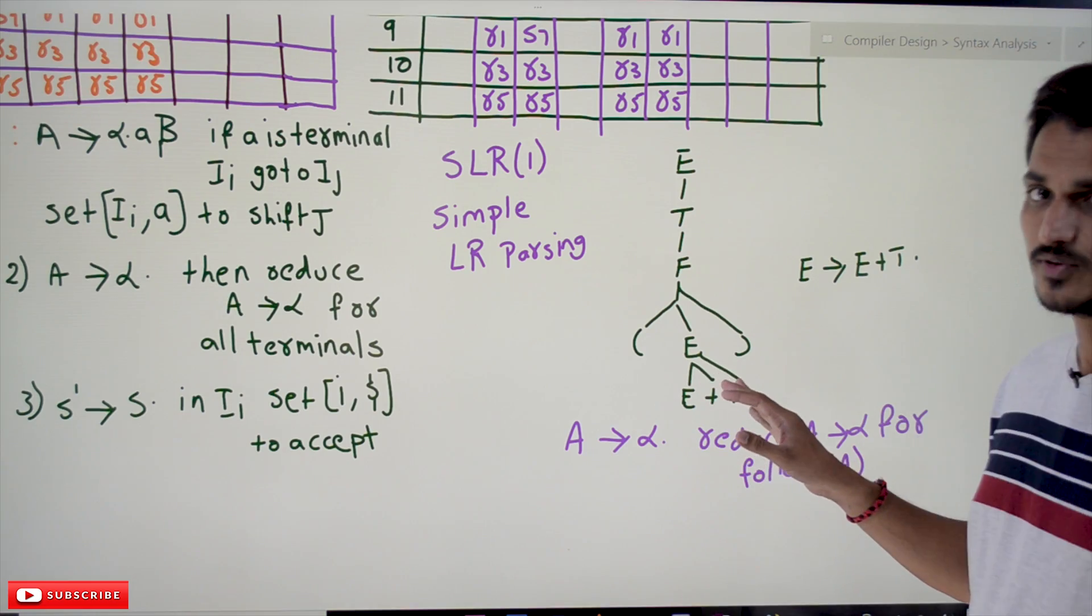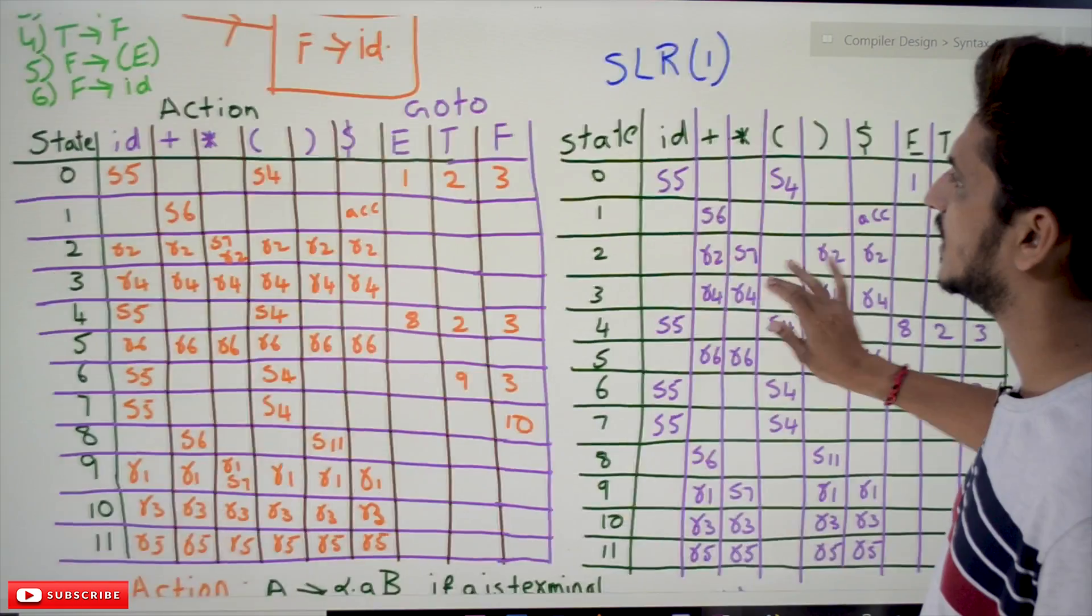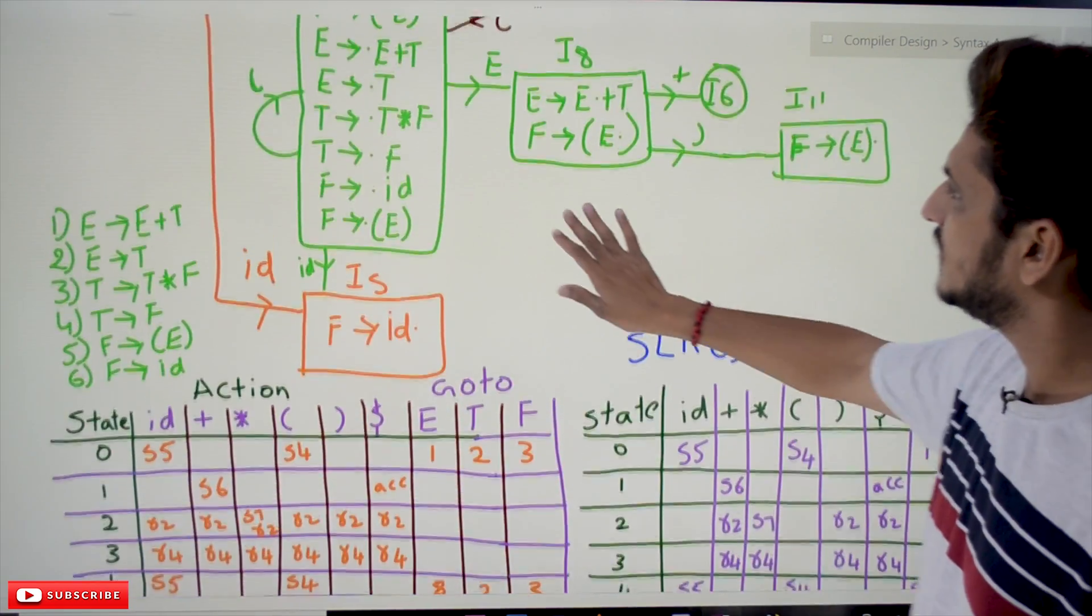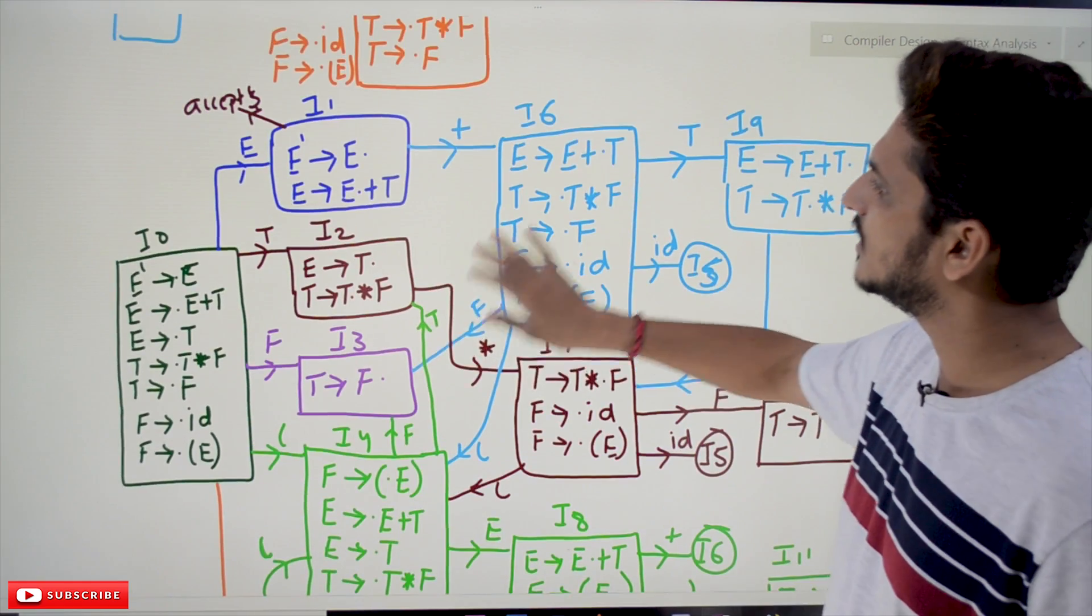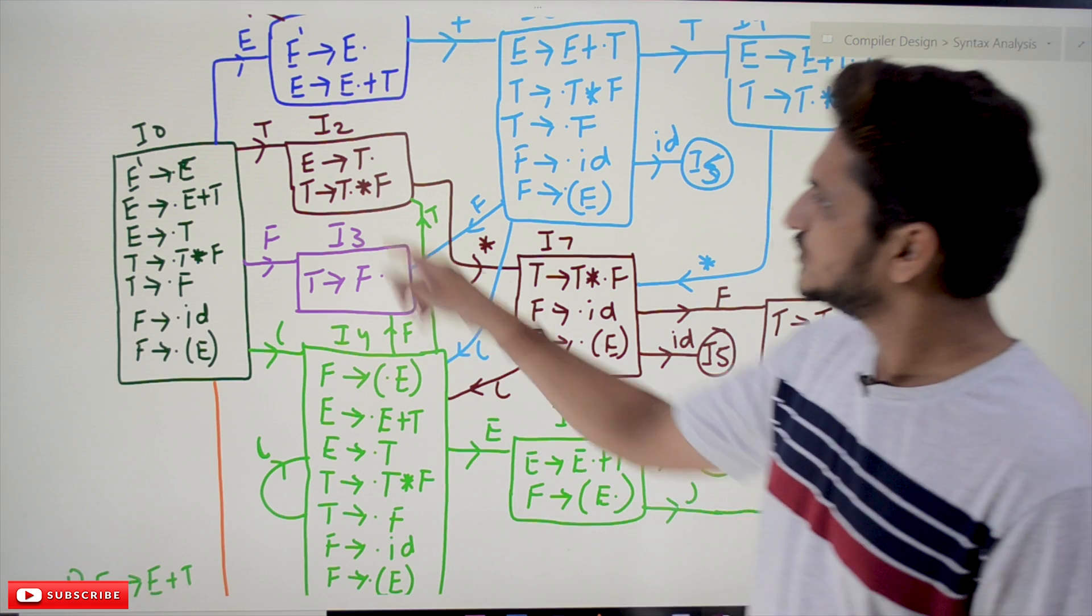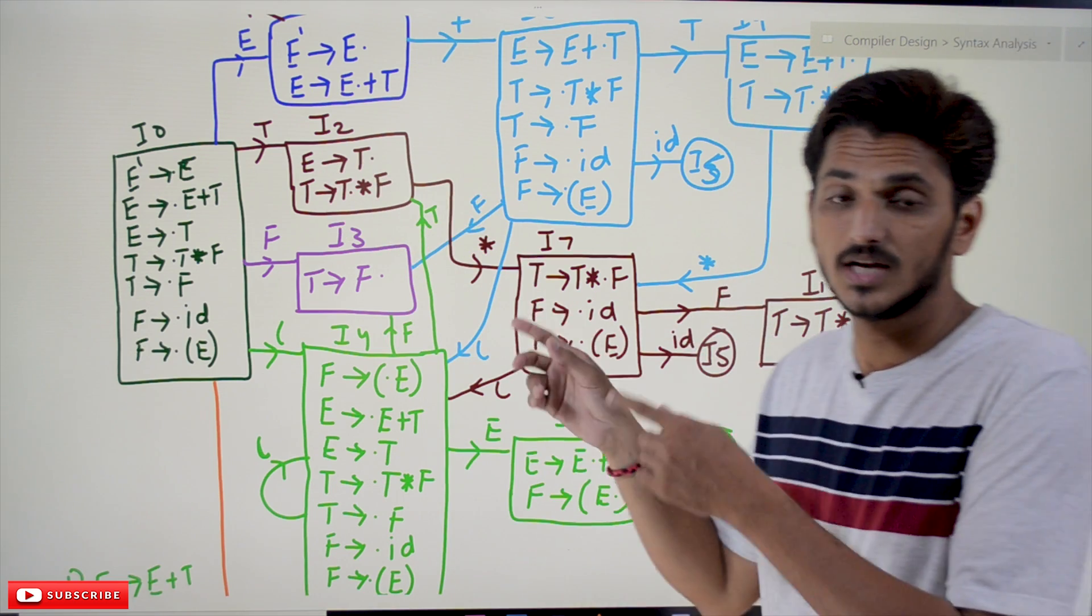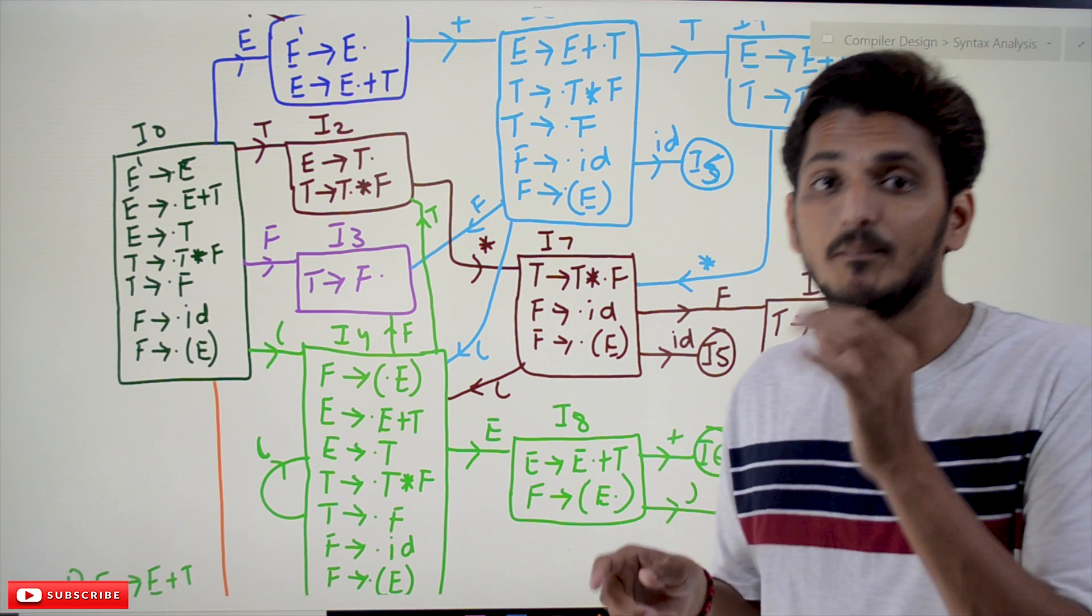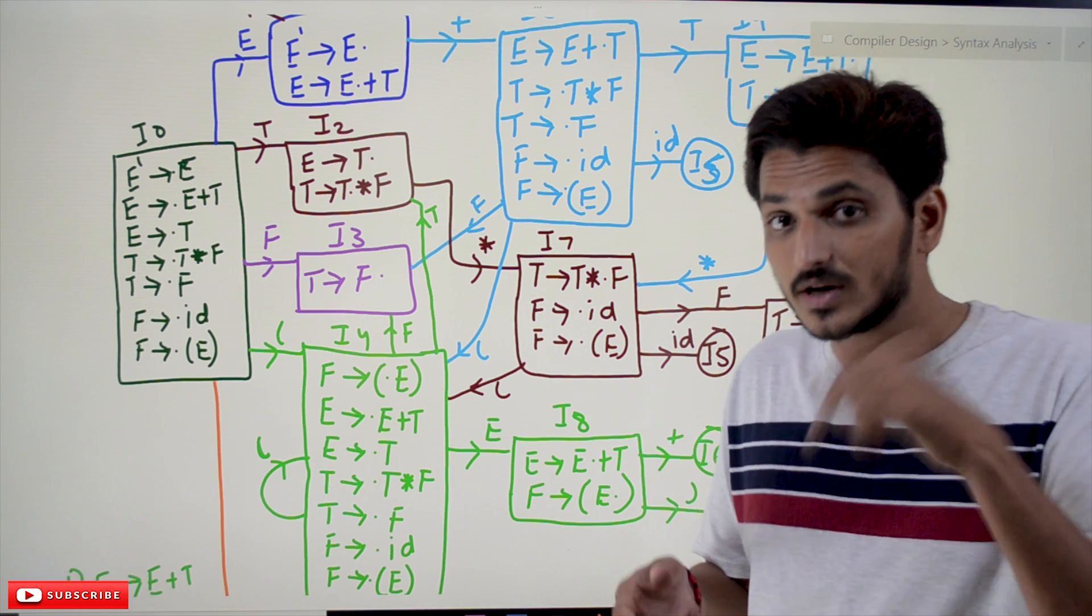Now coming to LR(0) and SLR(1), let's take an example. State I2 has E tends to T dot, meaning the production E tends to T dot has been completed. If the production has been completed, in our table we want to do reduce action.